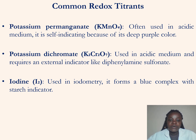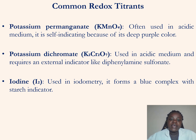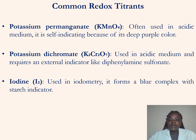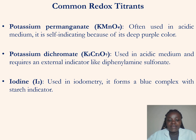The common titrants used in a redox titration are: potassium permanganate (KMnO₄), potassium dichromate (K₂Cr₂O₇), and iodine (I₂). Those are the most common titrants used, although there are others that can also be used.